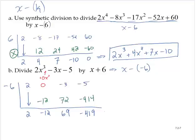Alright, so again, this tells me that the quotient is 2x squared. We started with an x cubed. We divided by an x. That gives us an x squared. 2x squared minus 12x plus 69.